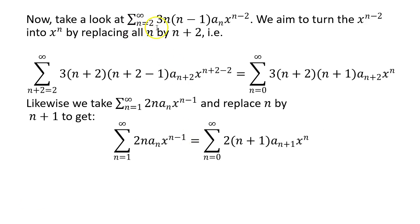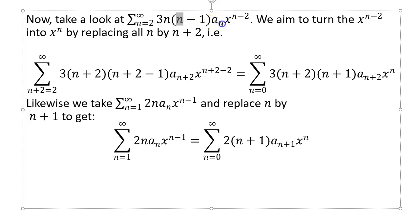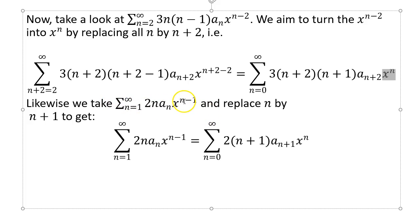After expanding, you'll see powers like x to the n minus 2 and x to the n minus 1 that differ from x to the n, so we need to shift indices. For the term with x to the n minus 2, replace n by n plus 2 so that n plus 2 minus 2 becomes just n — every occurrence of n in that summation gets replaced by n plus 2. Likewise, shift the other term by replacing n by n plus 1.